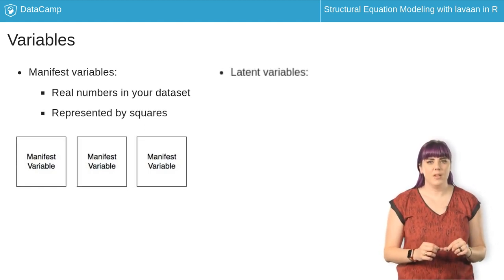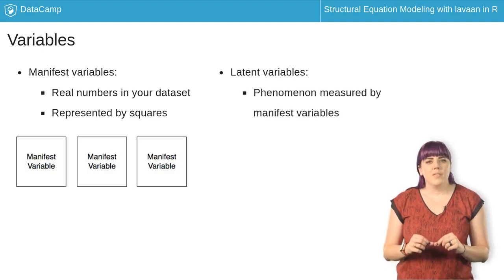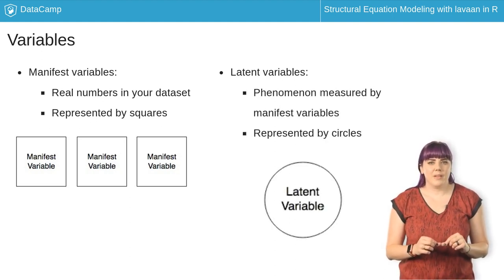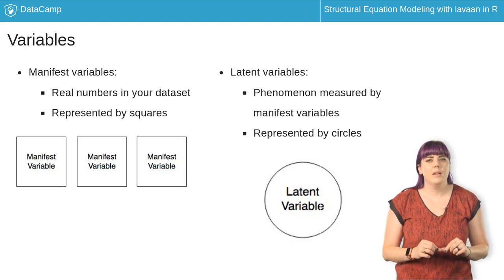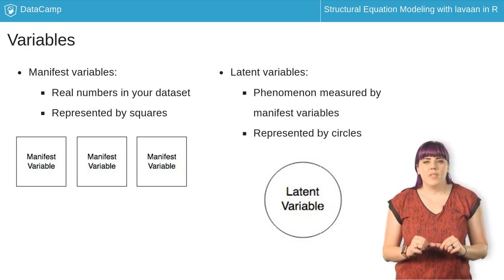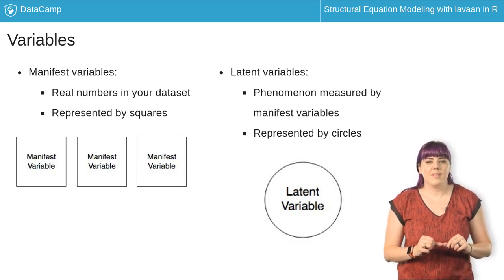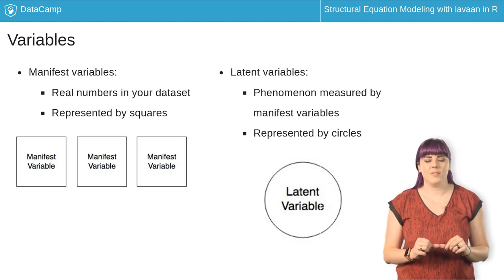Second are latent variables, which are represented by circles on this diagram. This variable is the abstract underlying phenomenon you're trying to measure indirectly using the measurements from the manifest variables. The idea is that the manifest variables are indirect measures of the latent variables, and therefore the latent variable has a causal relationship to the values obtained with the manifest variables.